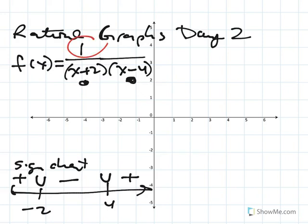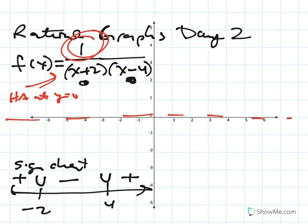A general rule is: if the numerator is a constant and the denominator has expressions, it's going to have a horizontal asymptote at y equals 0. Unless there's a plus something added, which would move the horizontal asymptote up — but that's not what's happening here. There are also going to be vertical asymptotes at negative 2 and positive 4.